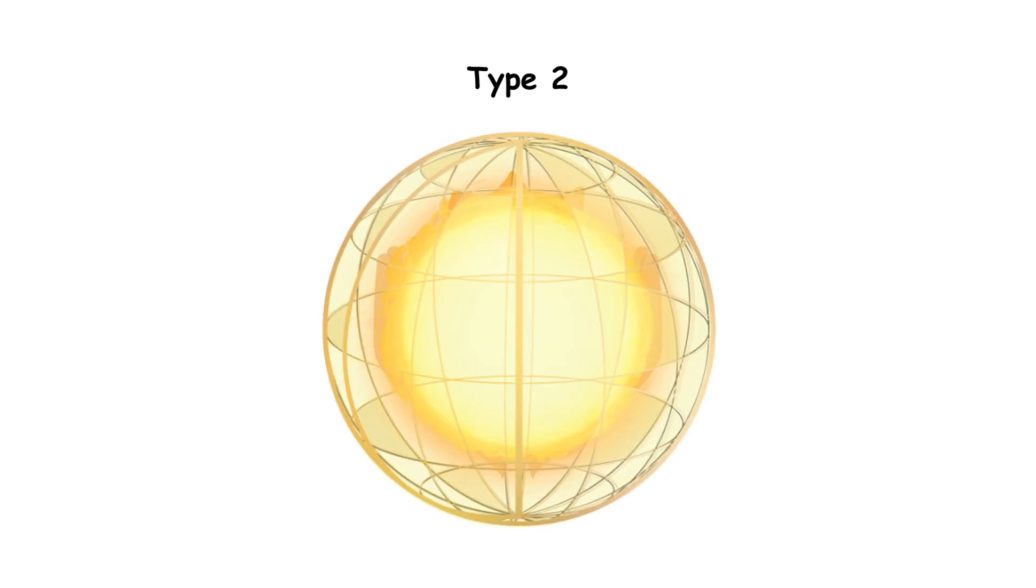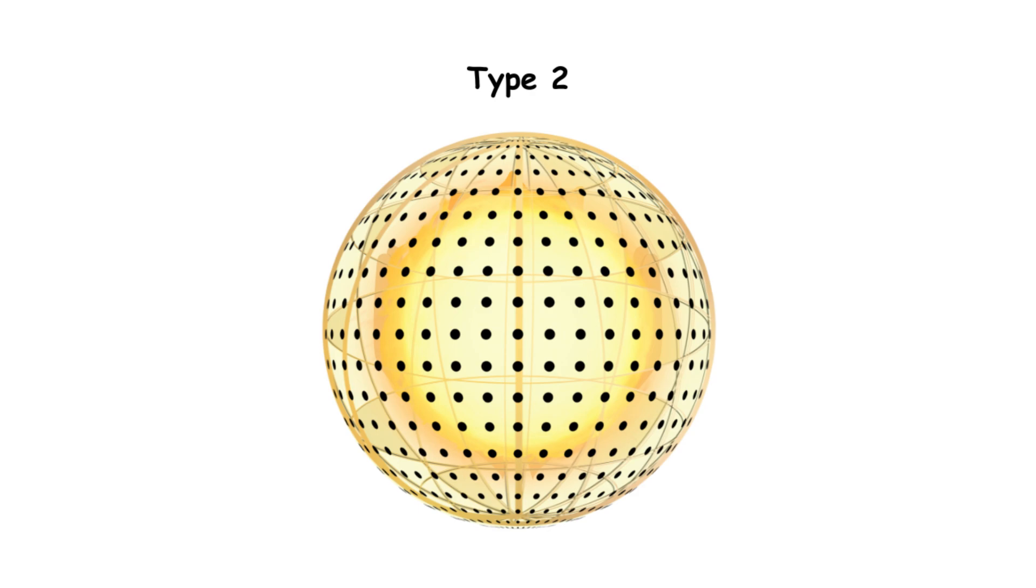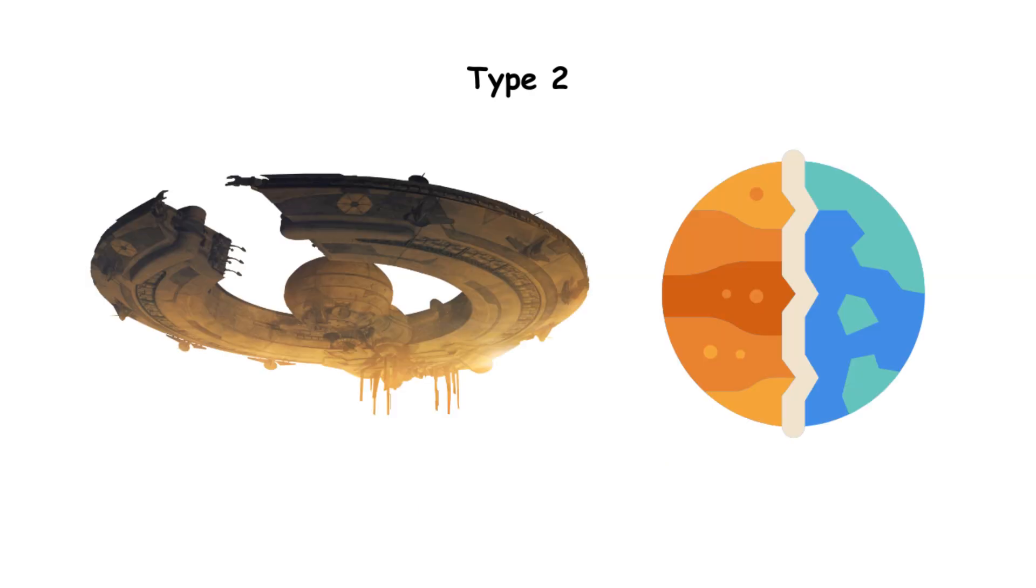They build Dyson spheres, or swarms, to capture solar power, live in space habitats, and terraform planets. They might even move stars.